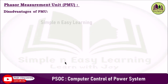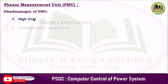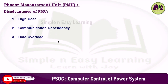Some disadvantages of phasor measurement units: First, high cost — the PMU and associated infrastructure such as GPS, communication, and storage are expensive to install and maintain, making the overall cost high. Second, communication dependency — it requires a reliable high-speed communication network, and delays and losses can impact performance.